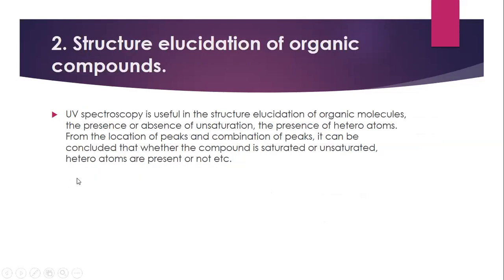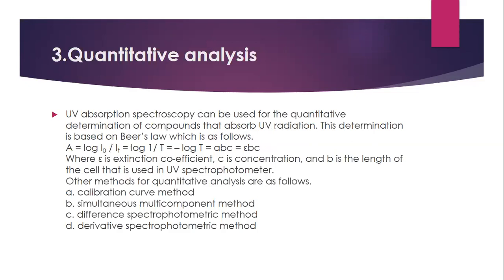The second application of UV visible spectroscopy is structure elucidation of organic compounds. UV visible spectroscopy is useful for elucidating the structure of organic molecules — specifically the presence or absence of unsaturation, the presence of heteroatoms — from the location and combination of peaks. It can be concluded whether the compound is saturated or unsaturated and whether heteroatoms are present or not.